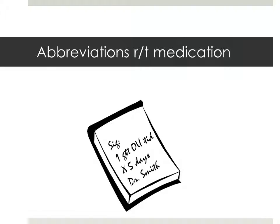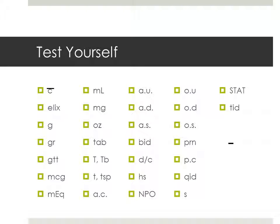It's important as health care workers that we know the abbreviations related to medication administration so that we don't make an error. Do you know what this SIG is? It says one drop in both eyes three times a day. Here are some medical abbreviations related to medication administration: width, elixir, gram, grain, drop, microgram, milliequivalent, milliliter, milligram, ounce, tablet, tablespoon, teaspoon.